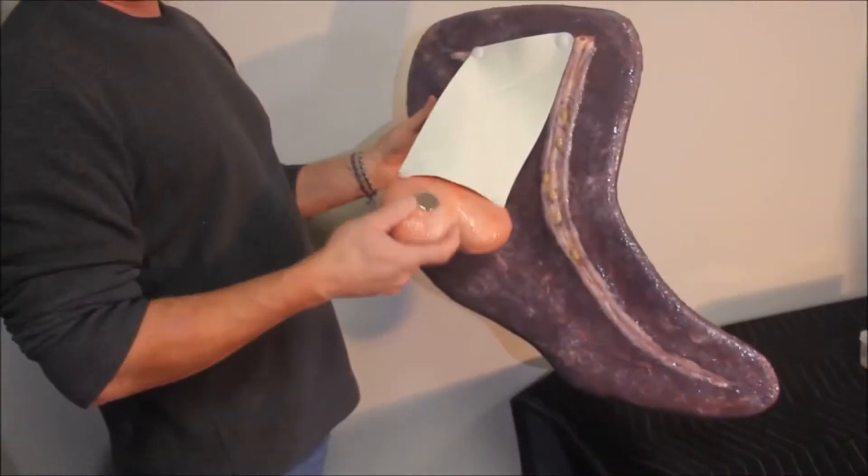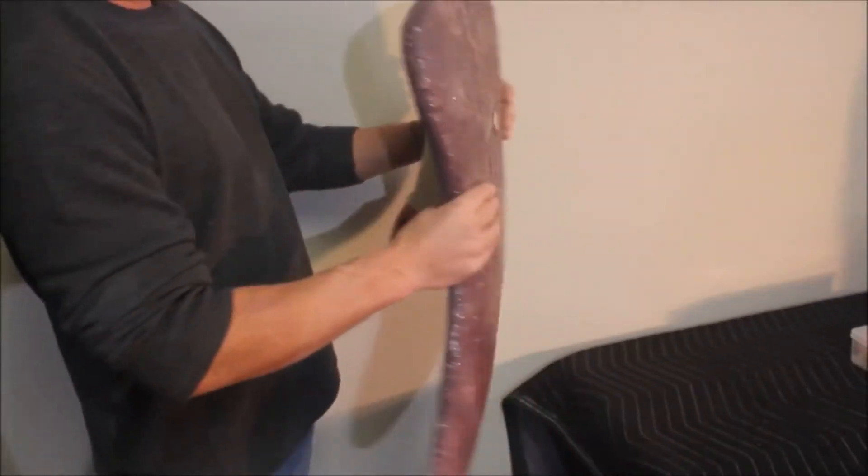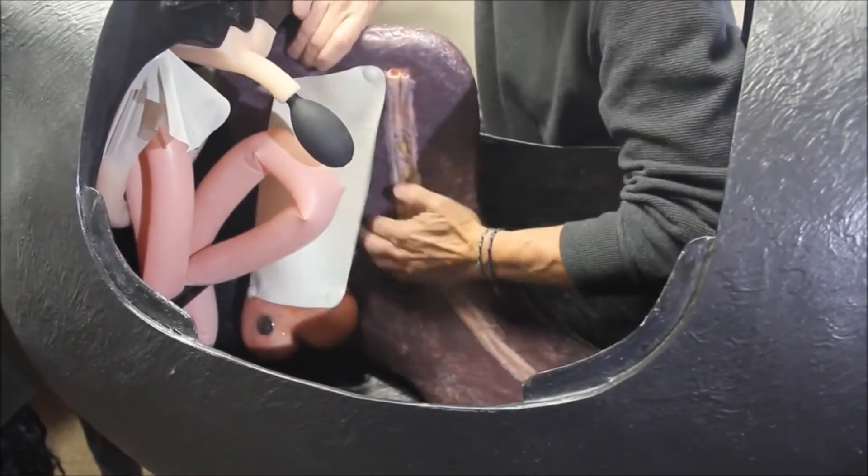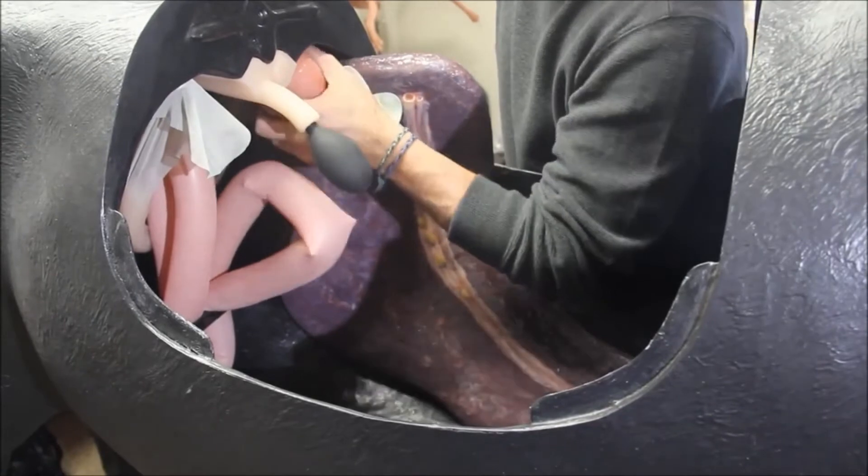A replica spleen and left kidney are attached with a representation of the rhinosplenic ligament. Both the kidney and spleen have magnets which connect with those situated within the horse's left body wall.